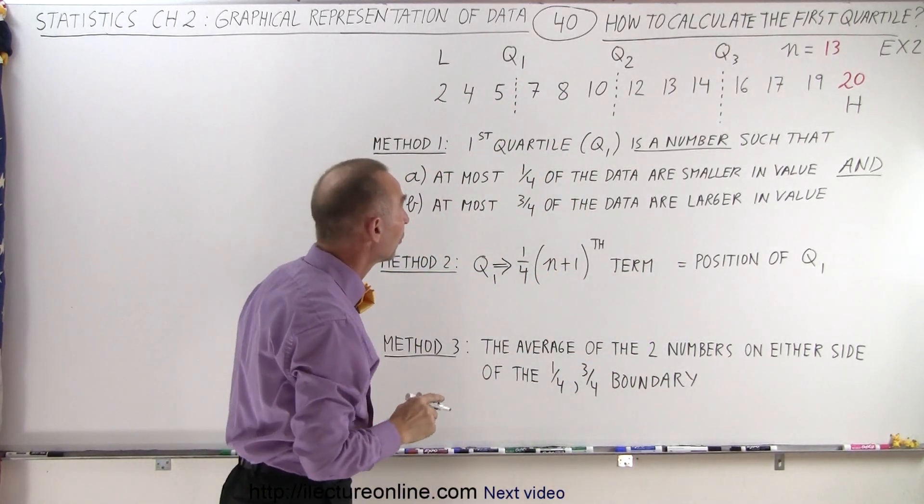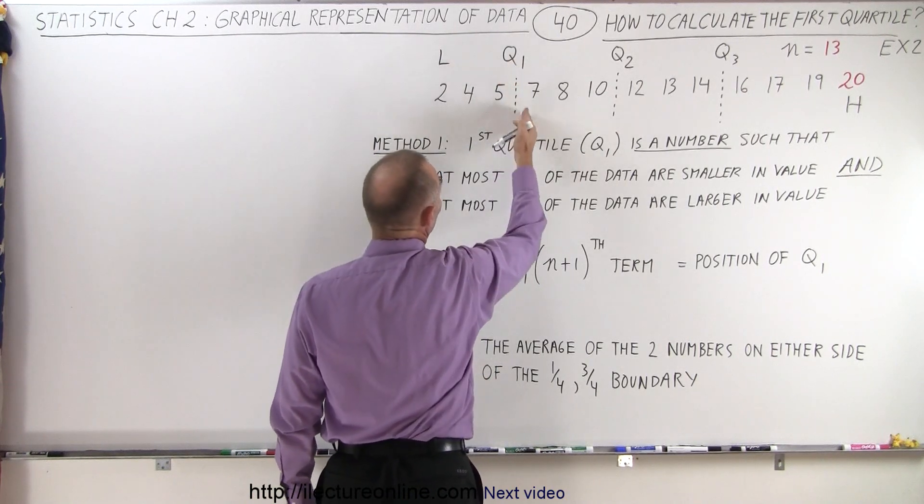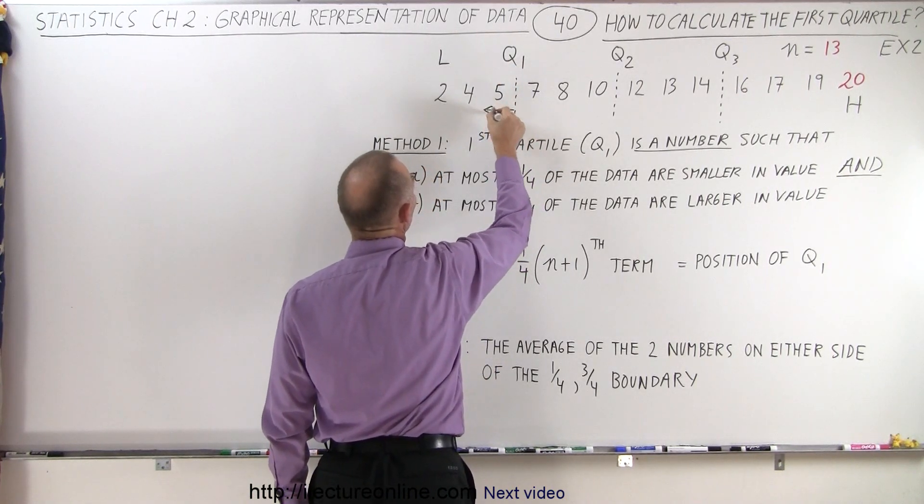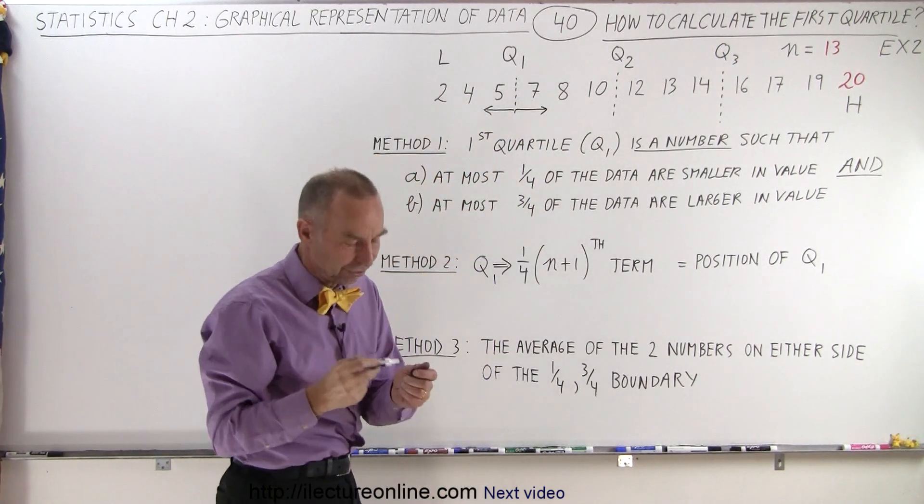There are now 13 data points, so if we think of this as being the point where the first quartile falls, then what percentage of the data points fall to the left and what percentage of the data points fall to the right? Let's find out.